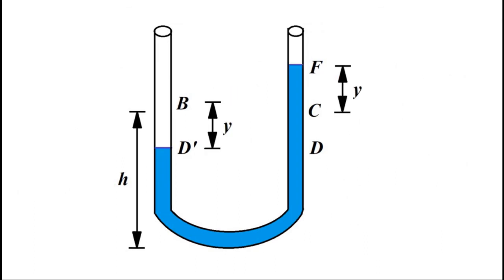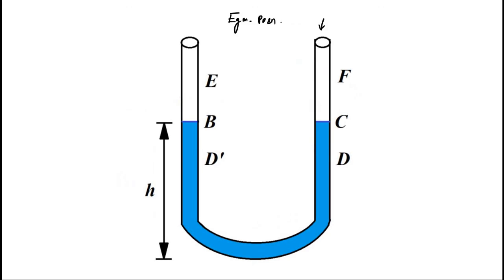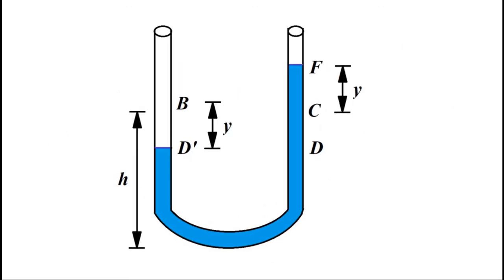So here we have discussed the simple harmonic motion example of the rise and fall of liquid in a U-shaped tube. I hope you like this video. Please subscribe to my channel, Engineering Tutorial, for more videos related to Engineering, Science and Technology. Have a great day. Thank you very much.